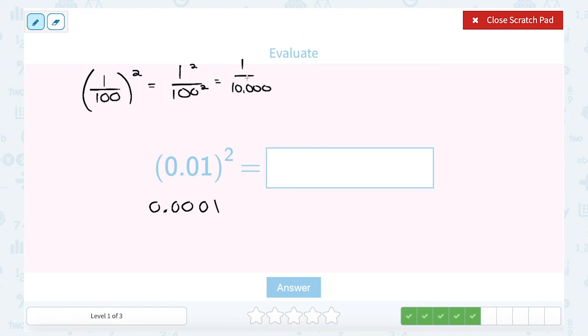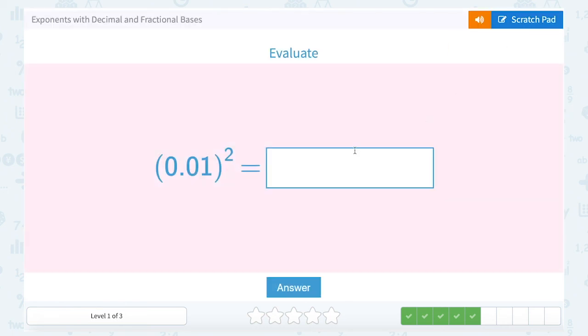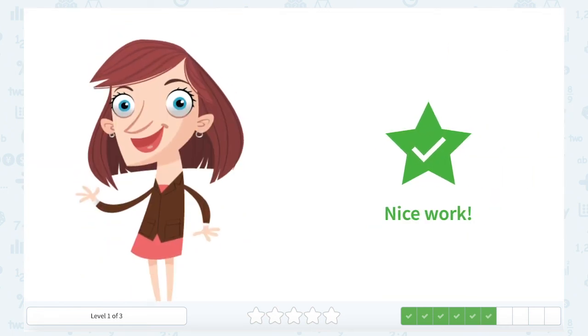1 over 10,000 would be our fraction answer. Whereas the decimal, notice the 1, this is our tens, hundredths, thousandths, ten-thousandths place. So this means the same thing as 1 ten-thousandth.